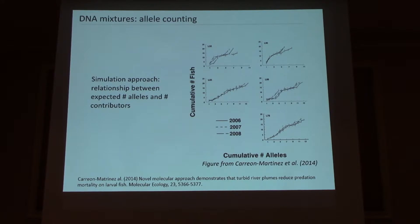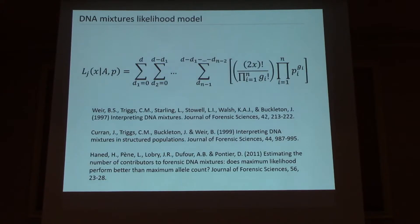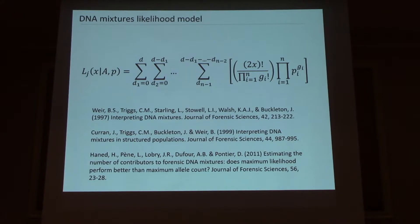So we're looking to improve upon that, and we've developed a maximum likelihood estimator, bringing this into a fully statistical inferential approach. It turns out there's already a maximum likelihood model that with slight modification could be applied in this context in an ecological setting — and I found it in the criminal forensics literature. It was actually developed to determine how many perpetrators were involved in sexual crimes, and similar mathematics have been used to identify remains at terrorist sites. So this has a dark history, but we can use it in ecology as well.